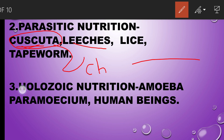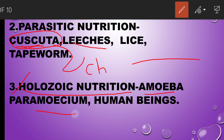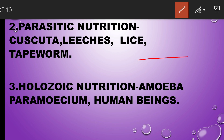The third type is holozoic nutrition, which is completely different from saprophytic nutrition. While saprophytes break down food outside the body and absorb it, holozoic organisms — holo meaning completely — take the whole food material into their mouth, break it down inside the body, and absorb it through their digestive organs. Examples of holozoic nutrition include amoeba, paramecium, and human beings.